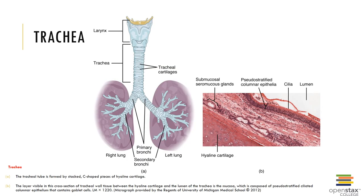The trachea, or windpipe, is a tough flexible tube that conducts air towards the lungs. It is composed of three distinct layers: the mucosa, submucosa, and adventitia. It also contains tracheal cartilages — 15 to 20 C-shaped rings of hyaline cartilage which stiffen the tracheal walls, protect the airway, and prevent collapse or over-expansion as pressure changes within the respiratory system. The trachealis muscle, when contracted, helps to reduce the diameter of the trachea and can thereby increase resistance to air flow.